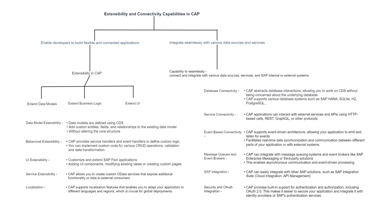We will go through the extensibility capability shown here on the left side of the screen. In CAP, you can extend data models, business logic, and the UI of your CAP application. Data model extensibility means that data models are defined using CDS, and you can add custom entities, fields, and relationships to the existing data model without altering its core structure.